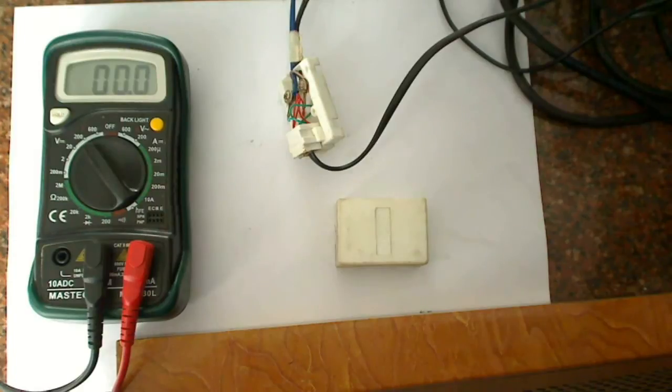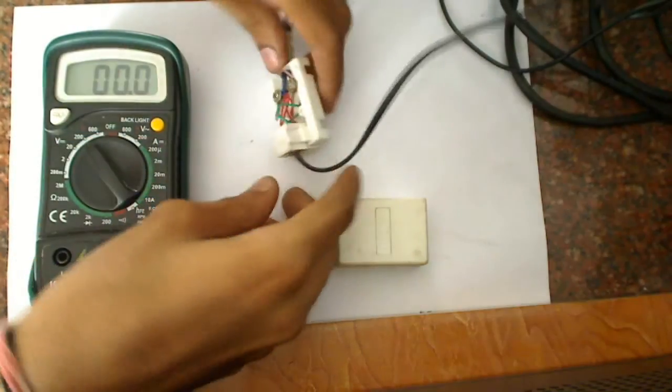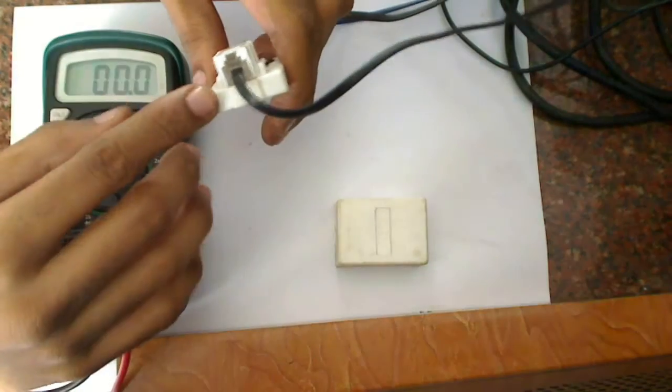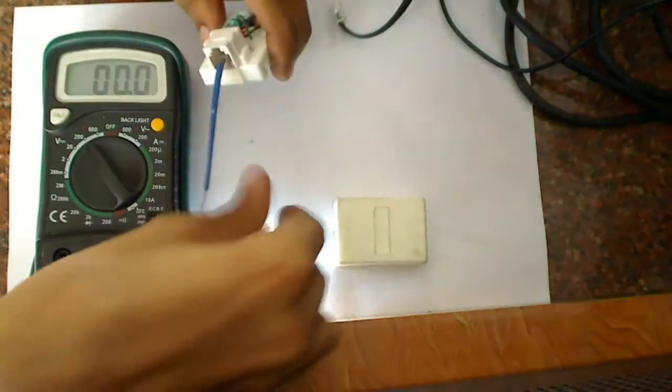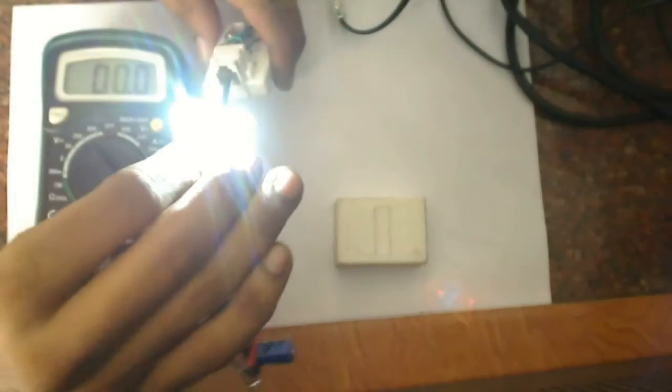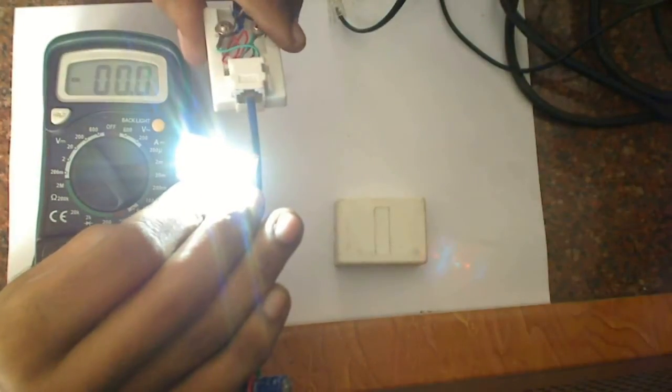So now we'll try to connect something and see if it lights or not. First I'll remove this pin and connect my circuit here. And you can see that the LEDs are glowing from this power. This is a landline cable and no supply is connected to this.